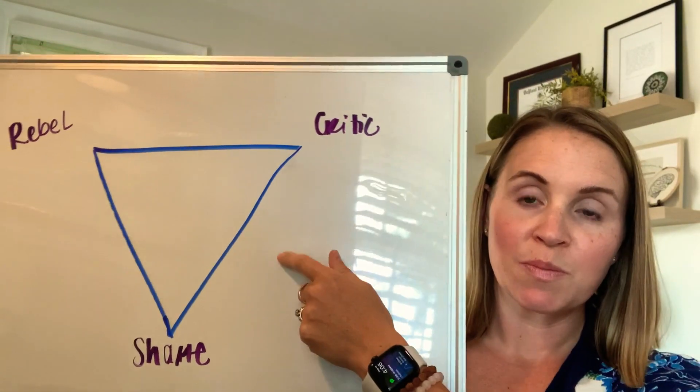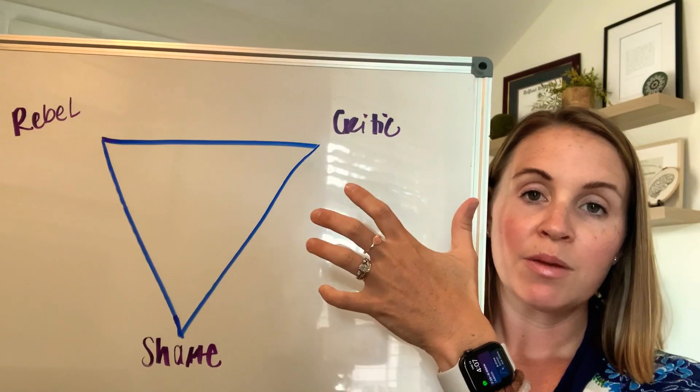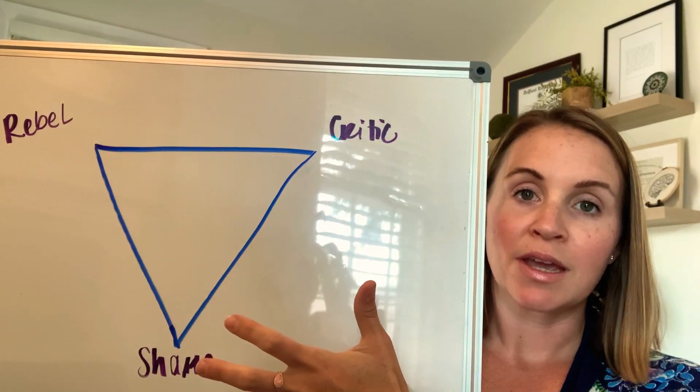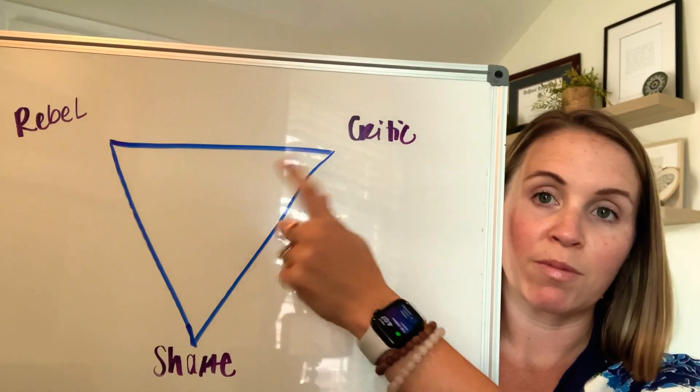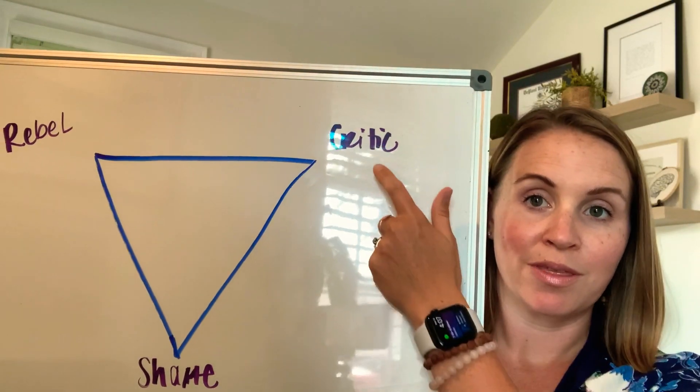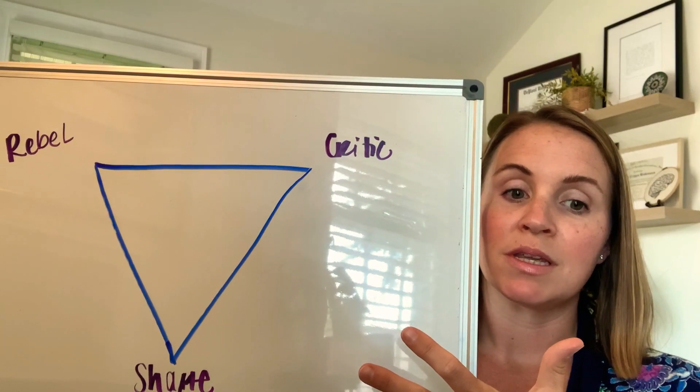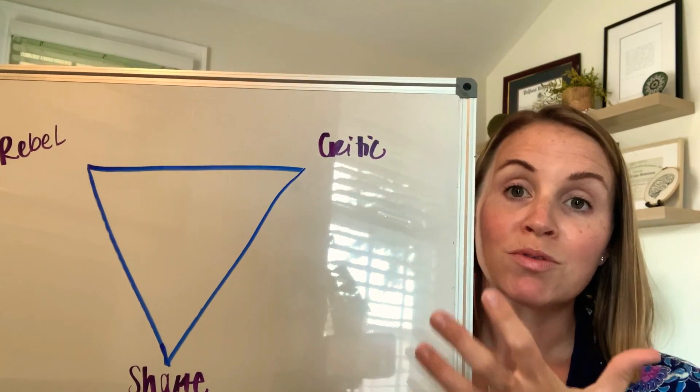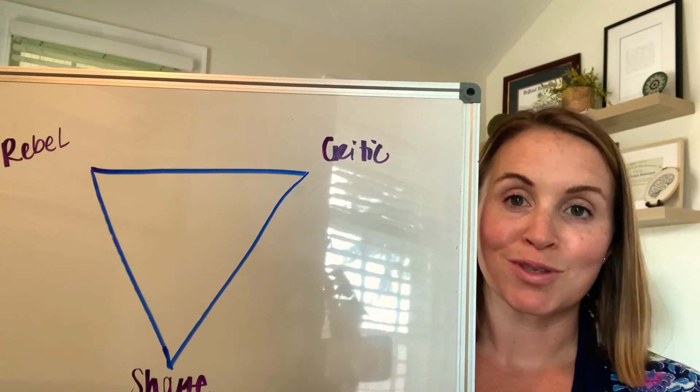So in this big triangle, it's important to first start with the part of ourselves that is easily identifiable. And so we have these three parts. We have the shame, we have the rebel, and we have the critic. And a lot of times we start to identify first with the critic or the rebel, because these are the behaviors that we are seeing most out there and that we are most concerned with.